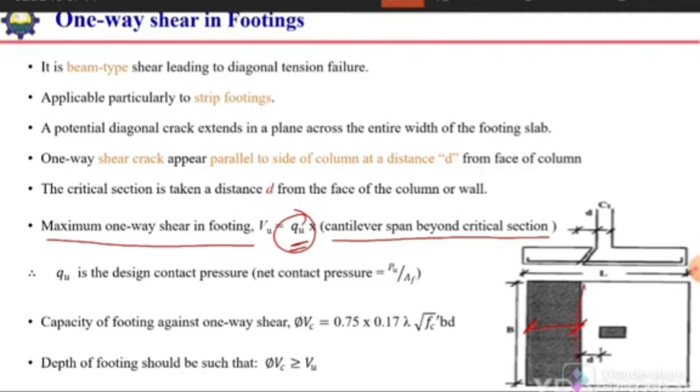The capacity of footing against one-way shear is given by an equation specified in ACI code, where b is the width of slab and d is the effective depth from top of the slab to the center of the reinforcement.